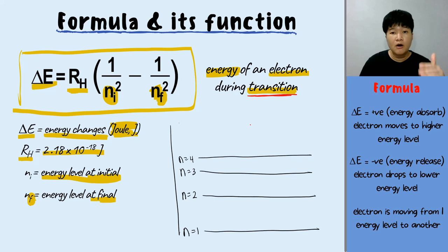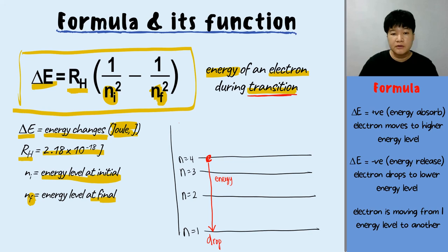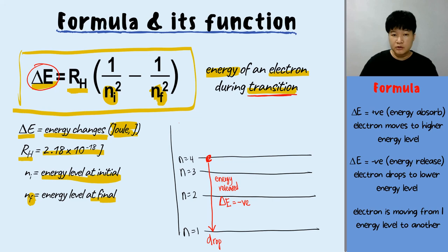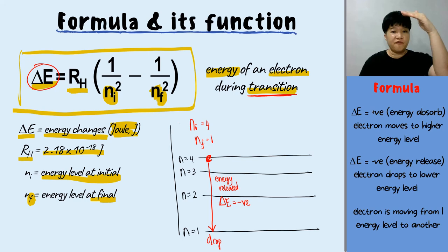If an electron is at N equals 4 and drops to a lower energy level, energy will be released. When energy is released, delta E calculated must be negative. So delta E is negative because the electron drops from a higher energy level to a lower energy level. In this case, N initial is 4, N final is 1, and delta E will be negative.